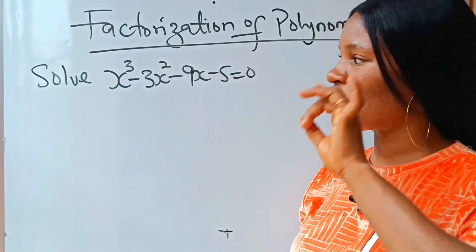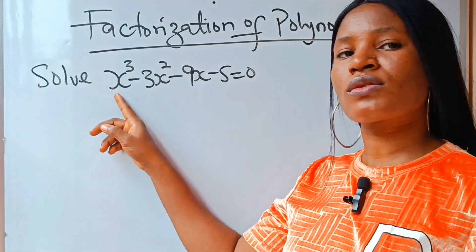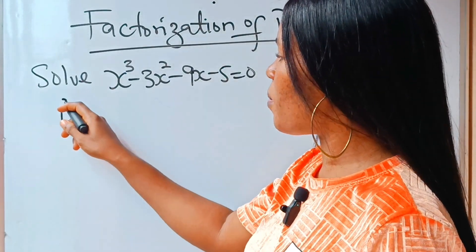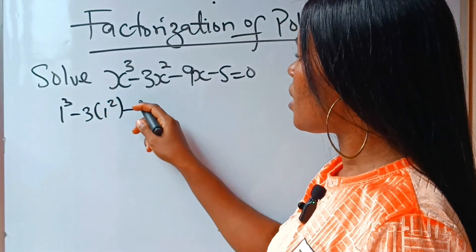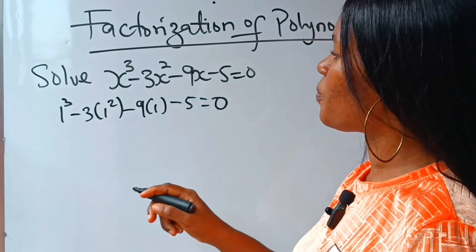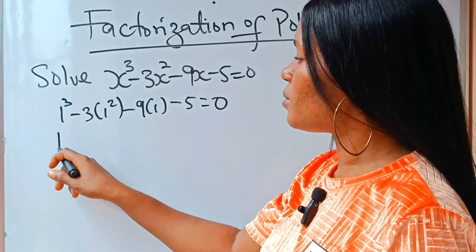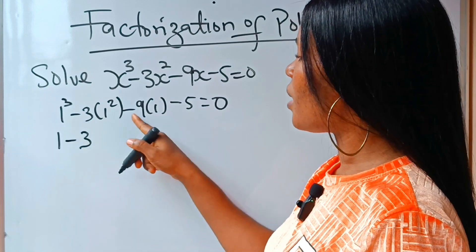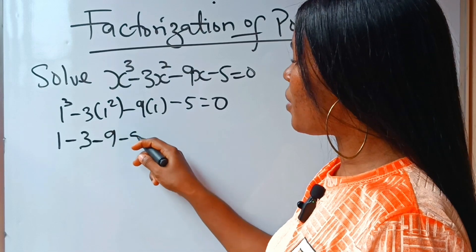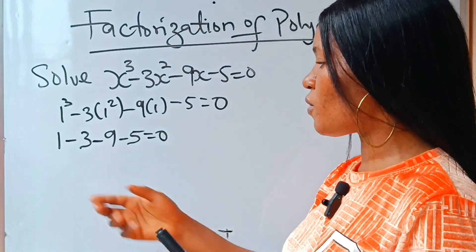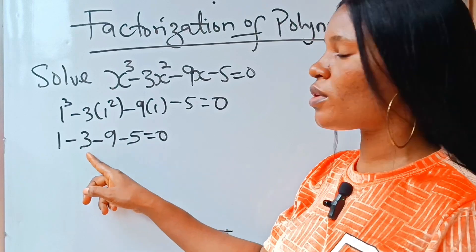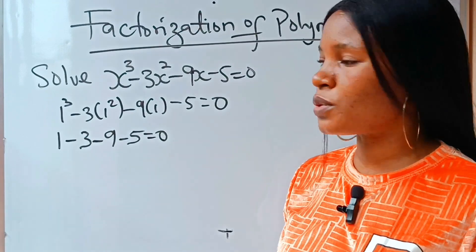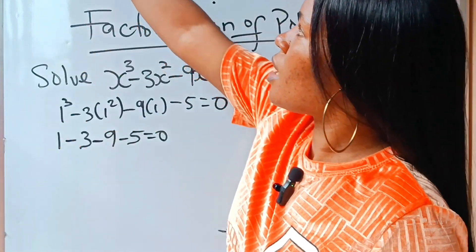What do I mean by that? Let's check. If we say let x equals 1, if we are going to get 0 when we substitute x equals 1 into this equation. We are going to have that 1 to the power of 3, minus 3 brackets 1 squared, minus 9 brackets 1, minus 5 is equal to 0. So 1 to the power of 3 is 1. 1 squared is still 1, and that 1 times minus 3 will give us minus 3. Minus 9 times 1 is still minus 9. So we have 1 minus 3 minus 9 minus 5. That is minus 16, which is definitely not 0. So that means that 1 is not a solution to this.